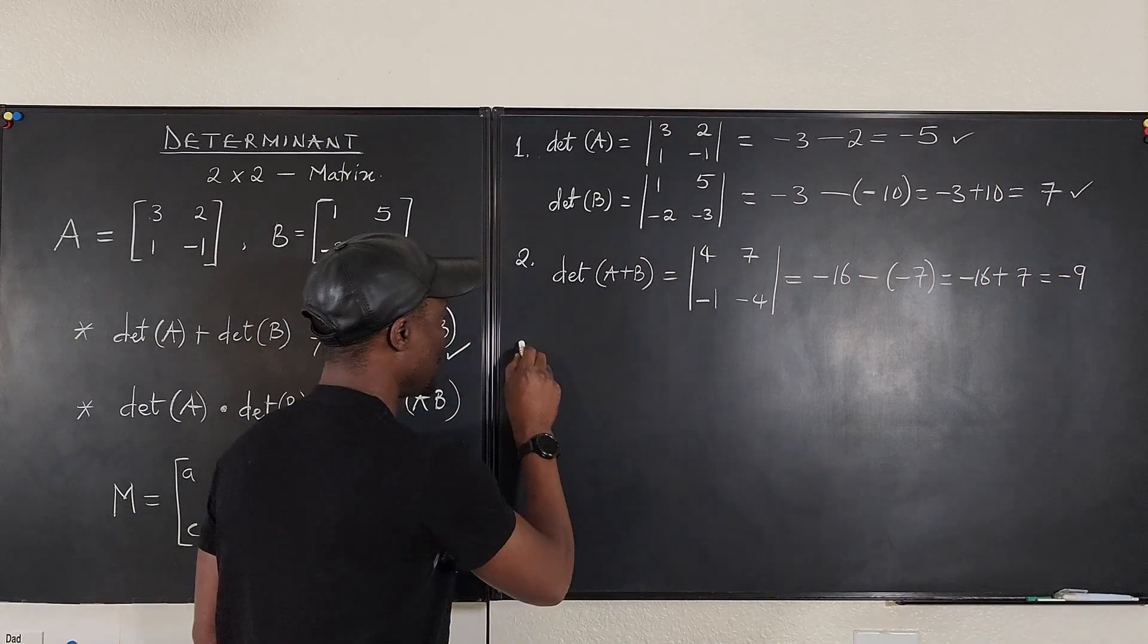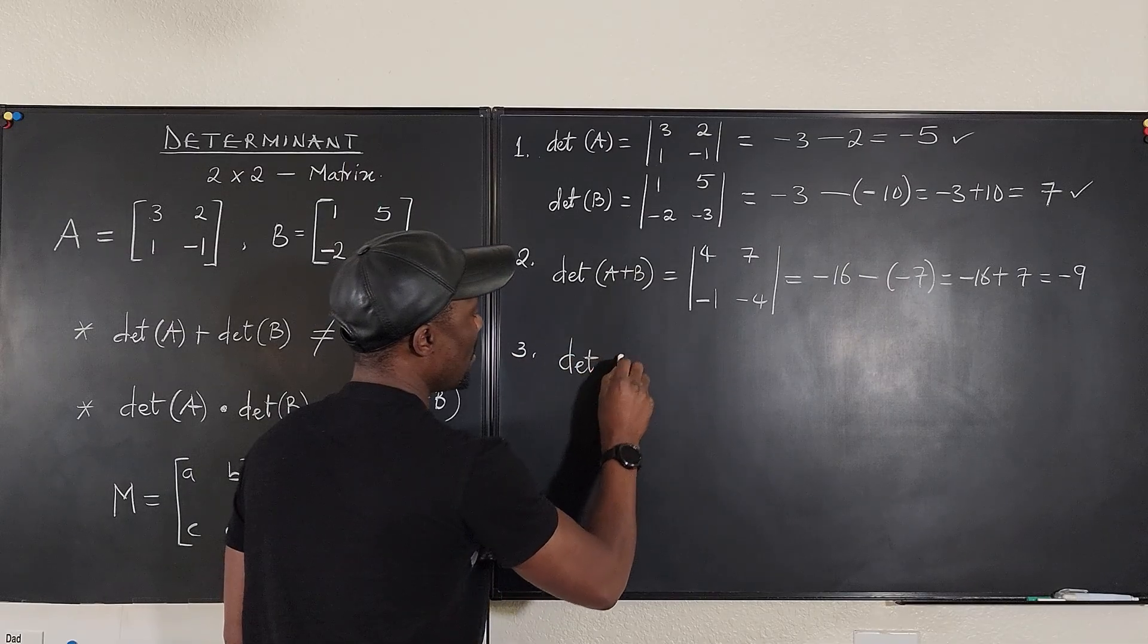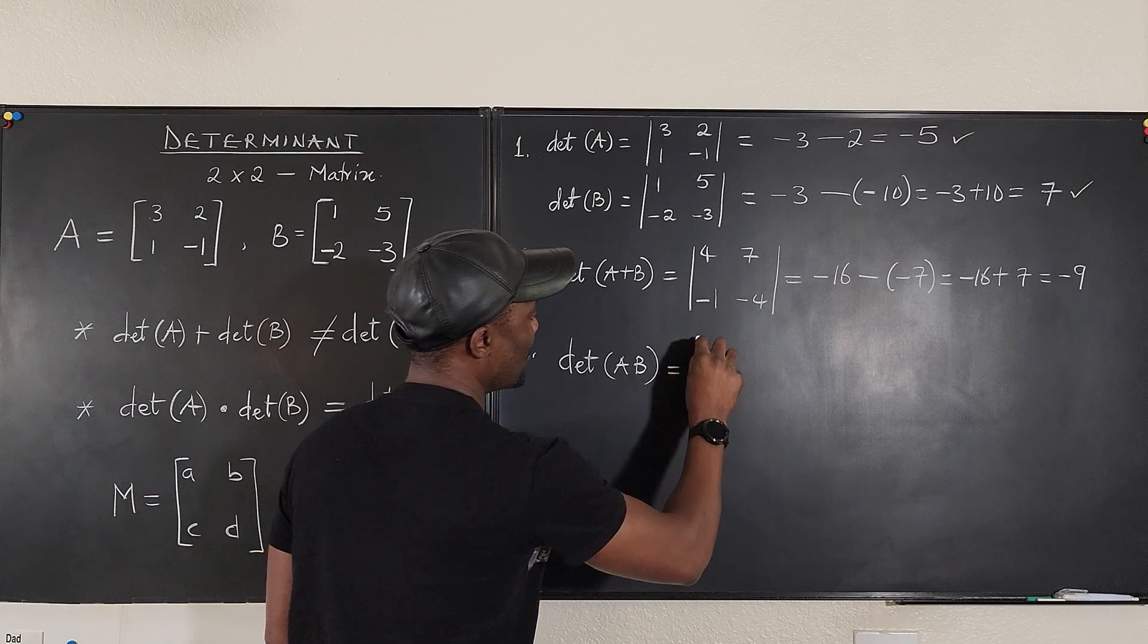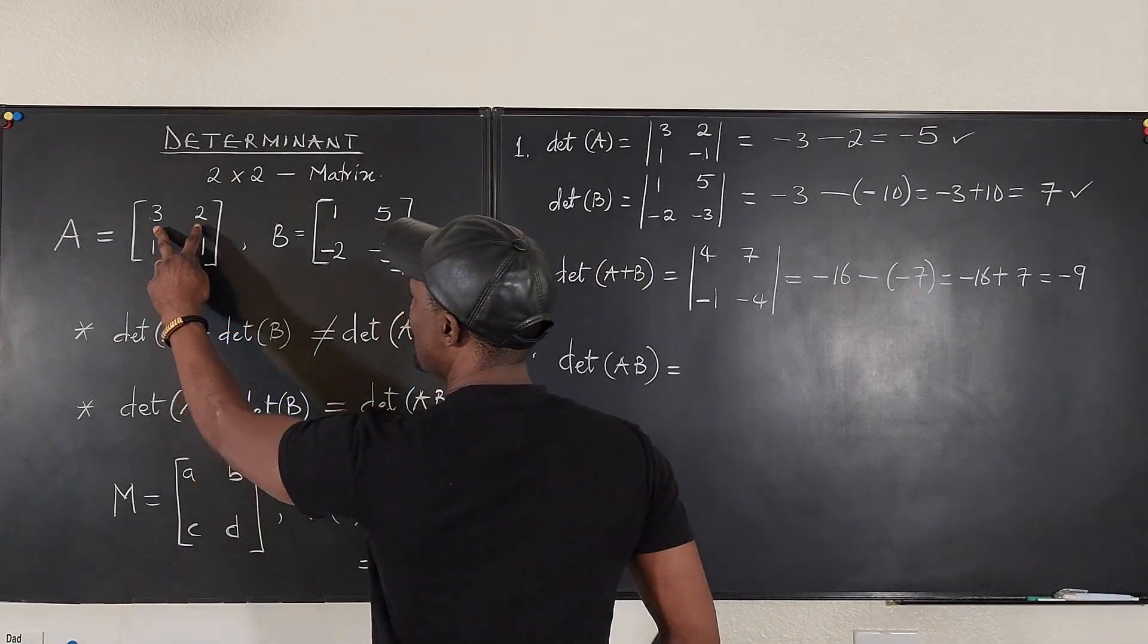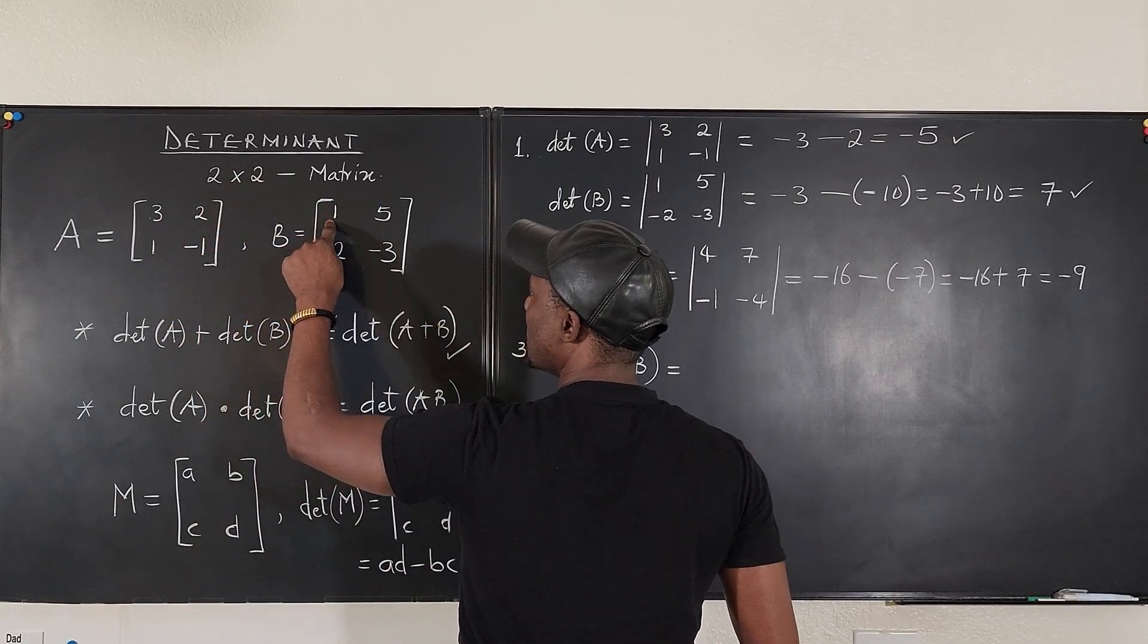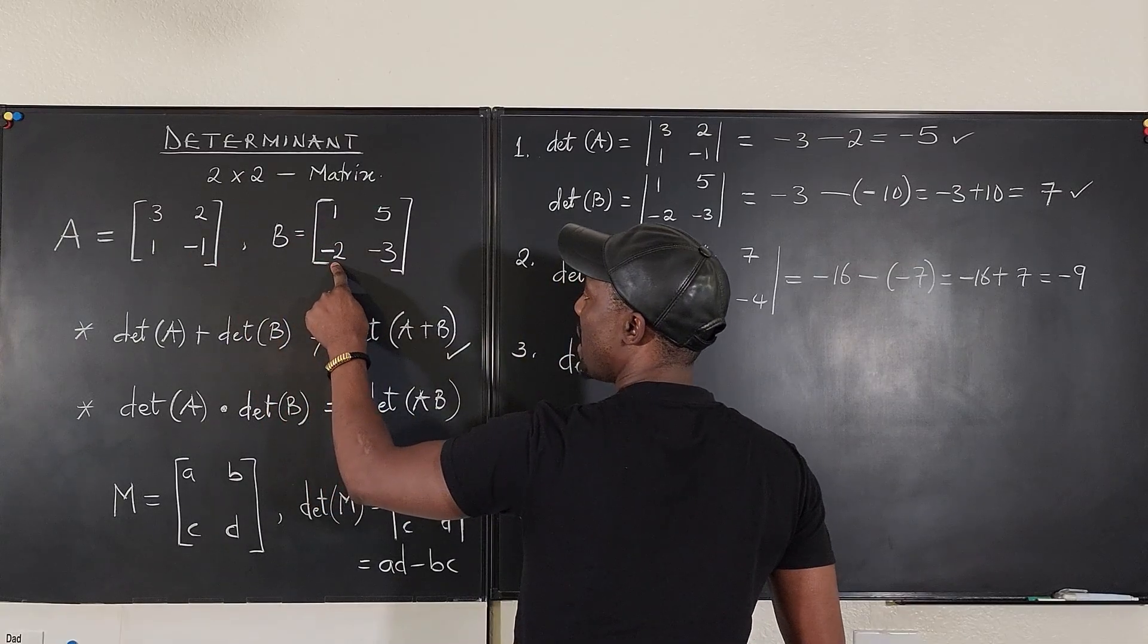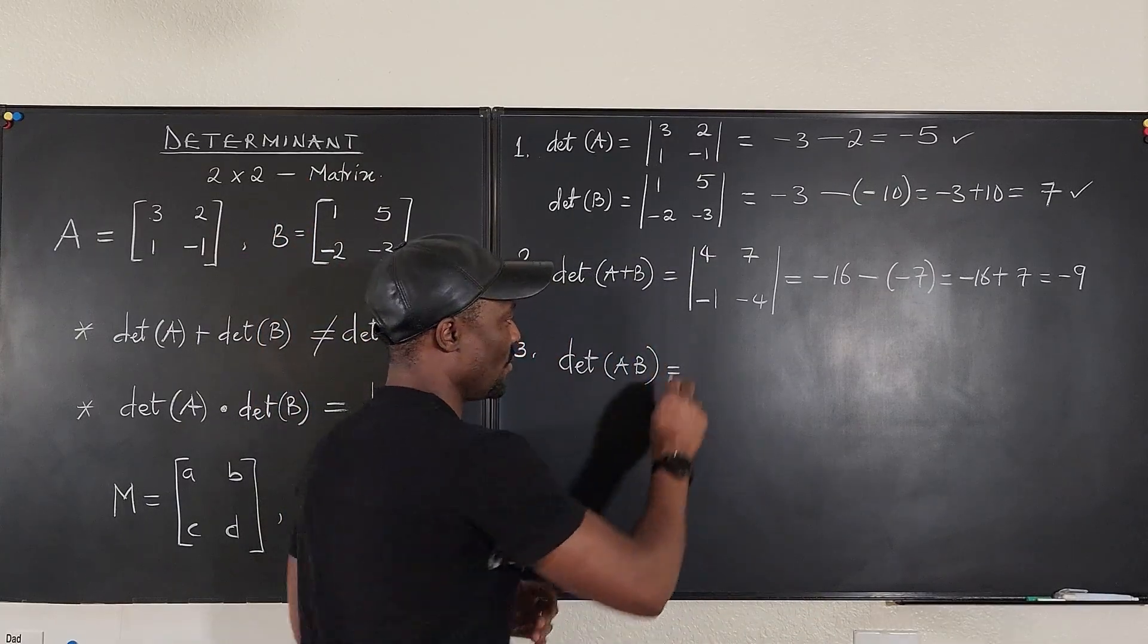Now let's go to the third one. What if it's a product? The determinant of A times B. Now let's do the multiplication. Remember, when you multiply, you take the row against the column. So it's going to be 3 times 1, which is 3. And then you have 2 times minus 2, which is minus 4. So this is 3 and minus 4. 3 minus 4 is minus 1. So the first entry here is minus 1.